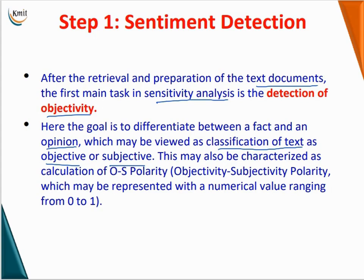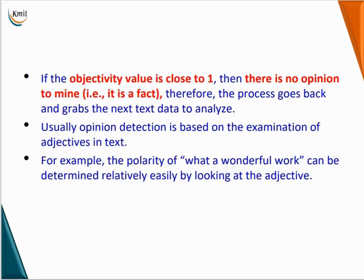In step 1, the goal is to differentiate between a fact and an opinion — that is, classification of text as objective (fact) or subjective (opinion). This may also be characterized as calculation of OS polarity (objectivity-subjectivity polarity), which may be represented with a numerical value ranging from 0 to 1. If the objectivity value is close to 1, there is no opinion — it is a fact — and therefore the analysis process goes back and grabs the next text to be analyzed.